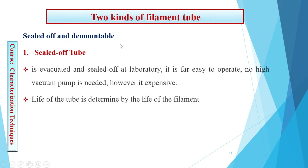There are two kinds of filament tubes: the sealed-off tube and the demountable tube. The sealed-off tube is an expensive tube because it is evacuated and sealed at the laboratory — it is easy to operate and requires no high vacuum pump. However, it is expensive because the life of the tube is determined by the life of the filament. If the filament fails, the tube is wasted and cannot be repaired since it is sealed.